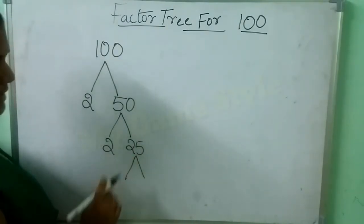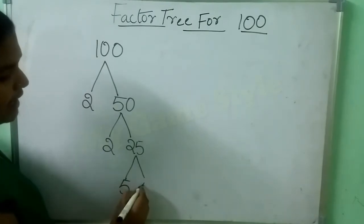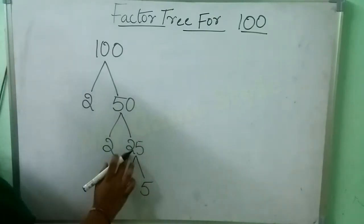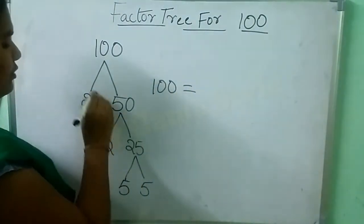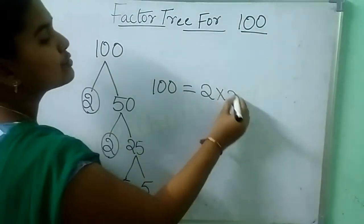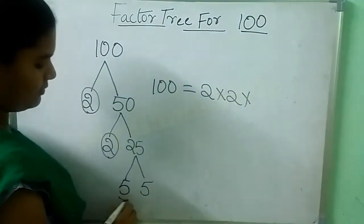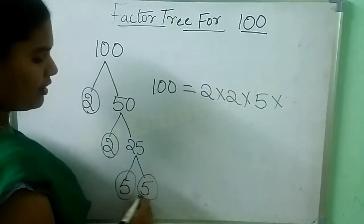Here 25 is there. In which table will 25 come? 5 times 5 is 25. So here 100 equals 2 into 2 into 5 into 5.